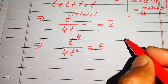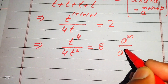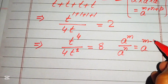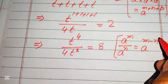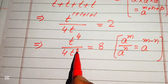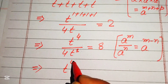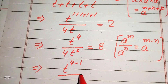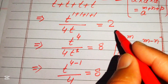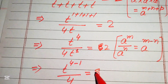Here we apply another exponent law: a to the power of m divided by a to the power of n equals a to the power of m minus n. According to this law, we subtract the exponent of the denominator, giving t to the power of 4 minus 1, divided by 4, equals 2.